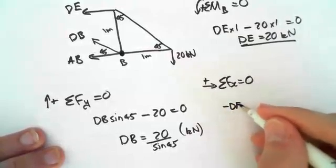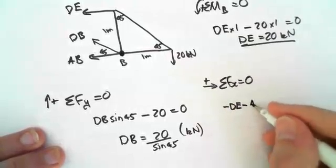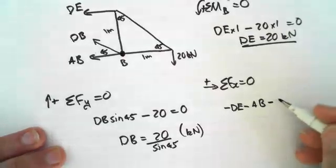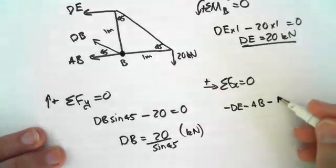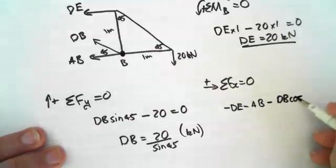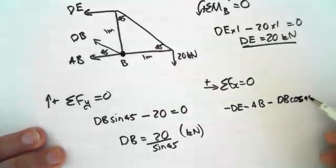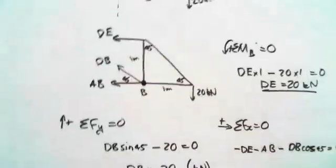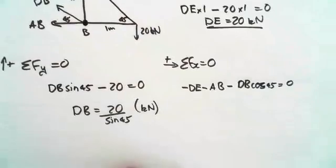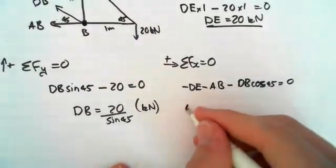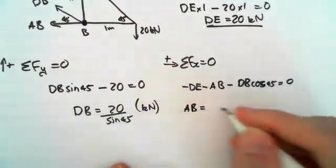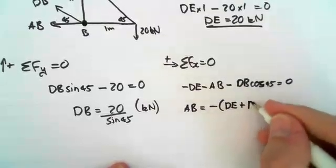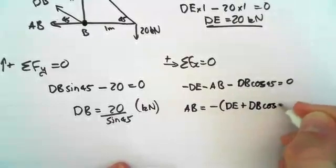Therefore we get negative DE minus AB minus DB cos 45 equals zero. That's because all the forces are acting to the left. So then what we don't have is AB. So AB equals negative DE plus DB cos 45.